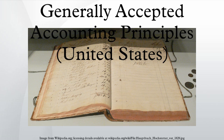Financial Accounting Standards Board: Realizing the need to reform the APB, leaders in the accounting profession appointed a study group on the establishment of accounting principles. This group determined that the APB must be dissolved and a new standard-setting structure be created, composed of three organizations: the Financial Accounting Foundation, the Financial Accounting Standards Advisory Council, and the major operating organization, the Financial Accounting Standards Board. FASB has four major types of publications: Statements of Financial Accounting Standards, the most authoritative GAAP-setting publications, with more than 150 issued to date.